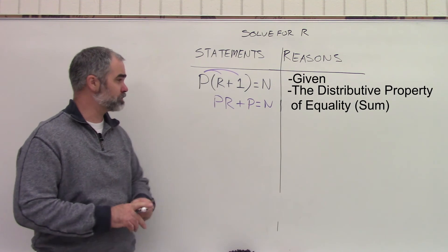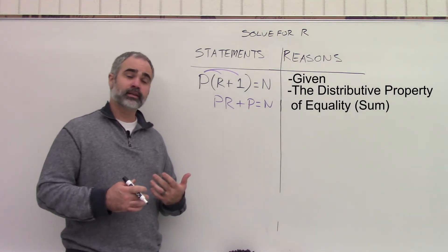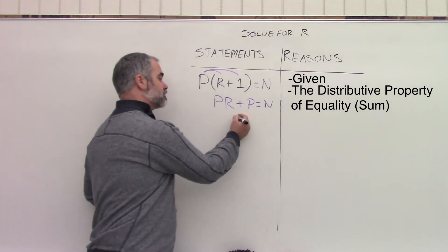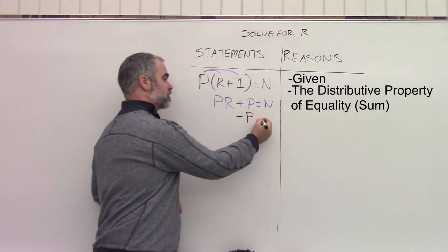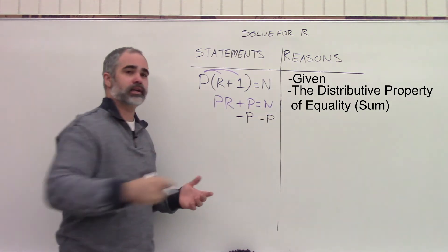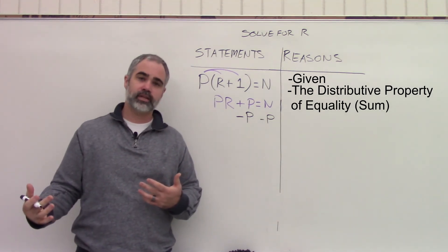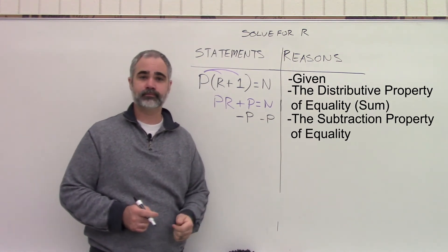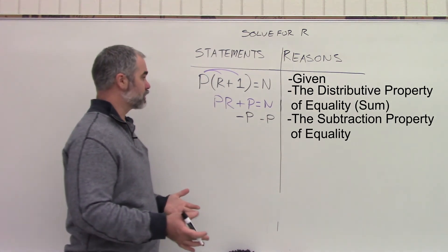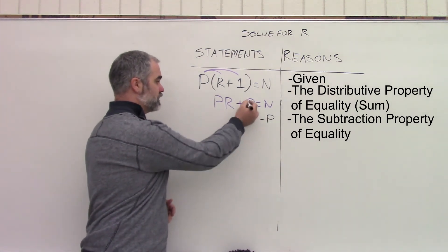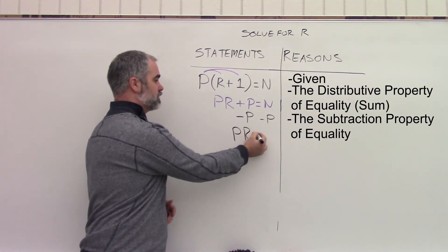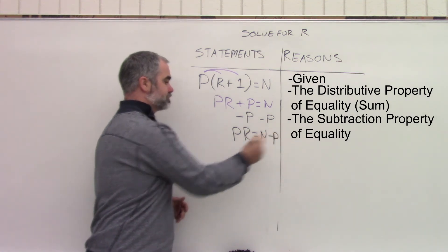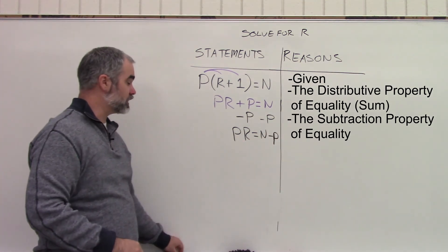The next step that I want to do if I want to get R by itself, I need to get rid of all the other things here. So this is being added. This P is being added. So I'm going to subtract P from both sides. And hopefully from that slide, you remember that this is the subtraction property of equality. The next thing that we're going to take a look at, these cancel the zero, gives me P times R equals N minus P.